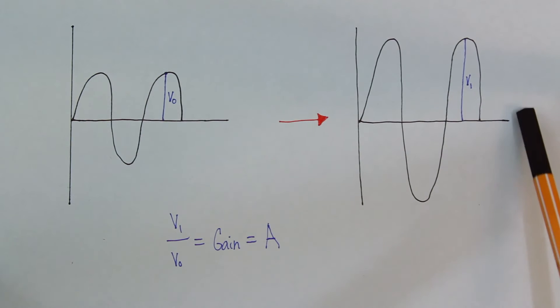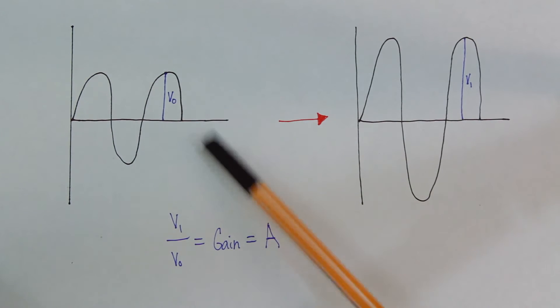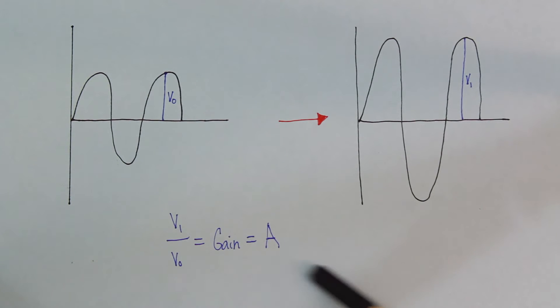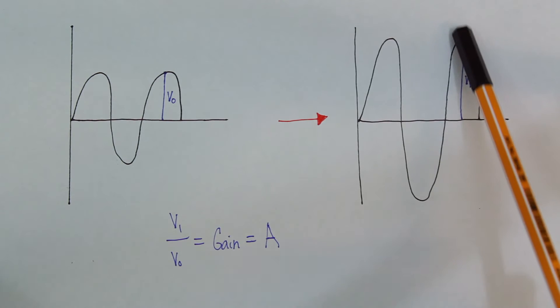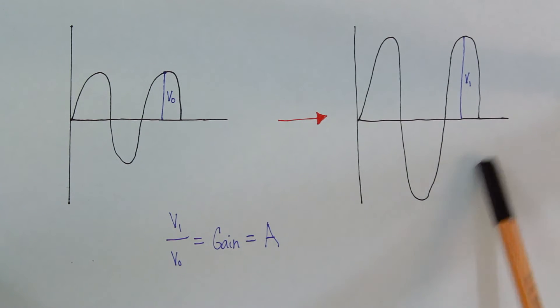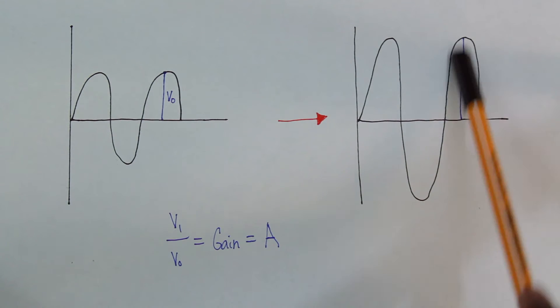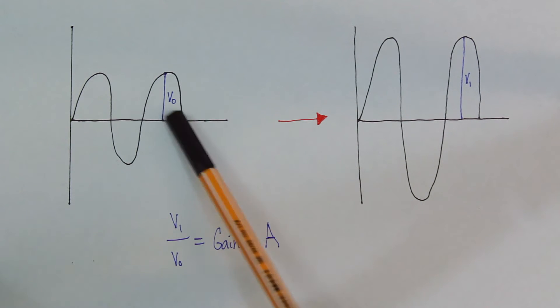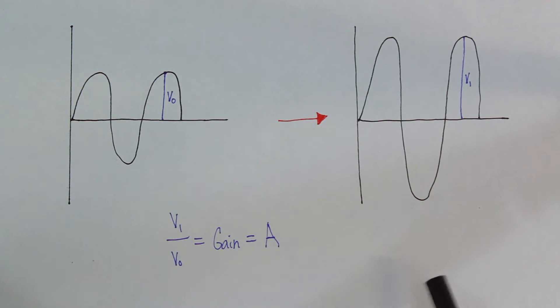And if the value A is above 1, then you'll get a curve on the amplified version that's bigger. Now you could also have a reduction where gain is less than 1, and you get a smaller version of the same curve. But that's all amplification is. And to get the amplification factor, all you need to do is divide V1, which is the amplitude of the amplified curve, by V0, which is the amplitude of the unamplified curve, or the source curve. And that'll give you your gain factor, A.